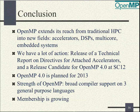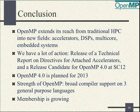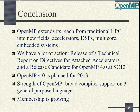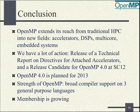The key messages are: OpenMP is extending from traditional HPC into new fields — accelerators, DSPs, multicore, and embedded systems — and the technical report on attached accelerators is one example of that. There's a lot of action at the moment: release of the technical report, release of the release candidate for OpenMP 4, and the final version of OpenMP 4 is planned for 2013. OpenMP 4 has broad compiler support on three general-purpose languages — Fortran, C, and C++ — and membership is growing, now at 24 members with more still coming in.